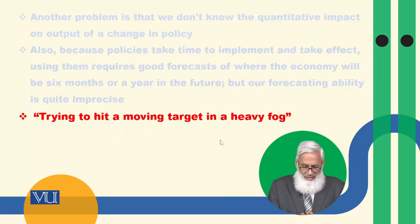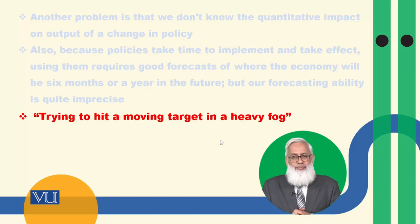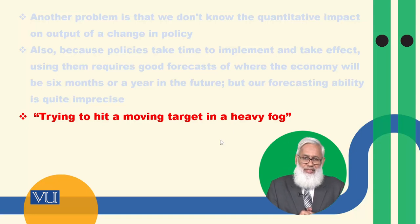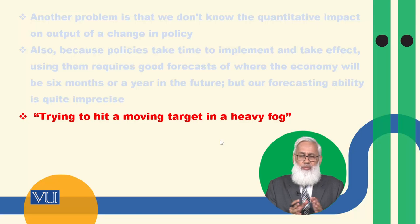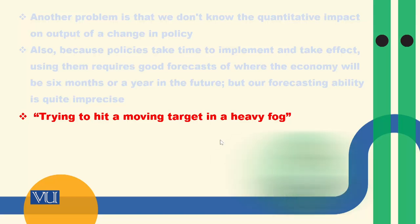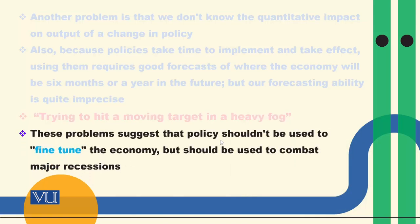इसकी मिसाल ऐसी है: to hit a moving target in a heavy fog — उड़ते हुए परिंदे को target करना और मौसम भी साफ नहीं। These problems suggest that policy shouldn't be used to fine-tune the economy but should be used to combat major recessions. जो minor changes हैं उनको correct करने के लिए ये policies successfully use नहीं कर सकते — severe recessions के लिए इन्हें use करना चाहिए। Okay, thank you.